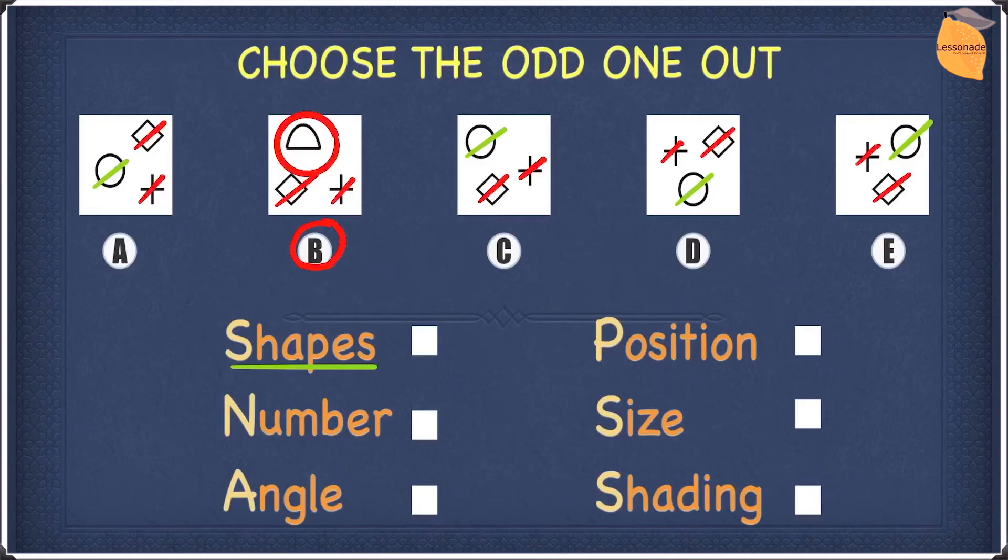So since a semicircle is not a circle, this means our answer for this question is B because B is the odd one out. So I hope you guys understood everything so far. Now, let's go on to the next one.